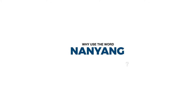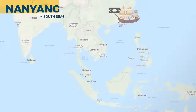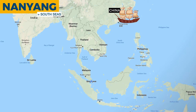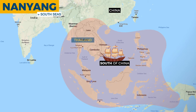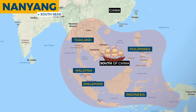So why use the word Nanyang? The Nanyang, translated literally as the South Seas, refers to the Southeast Asian region located south of China where the Chinese traded — so Thailand, Indonesia, Singapore, Malaysia, and the Philippines.